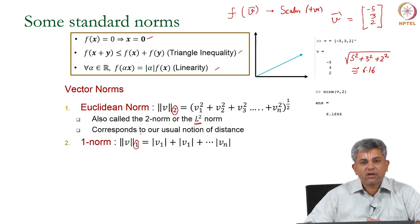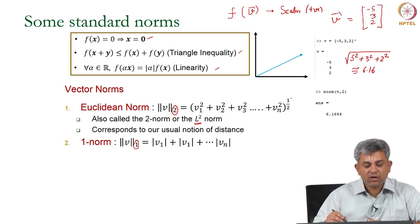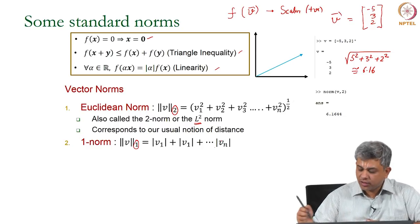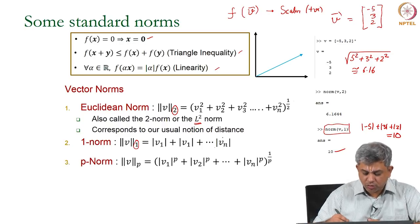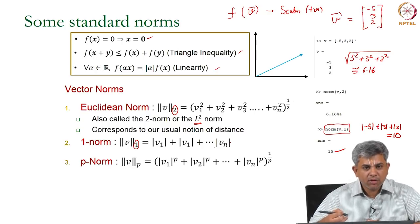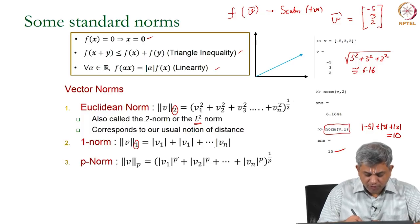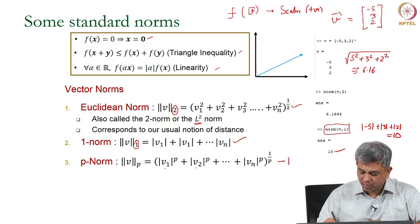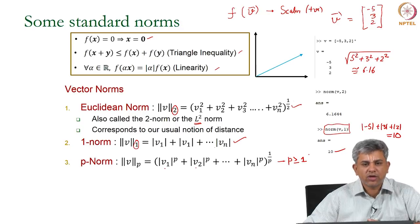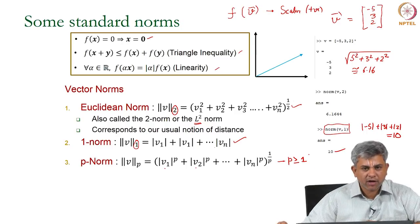A similar norm is called the 1-norm. Instead of squaring and taking the square root, you simply add the absolute values. So the 1-norm here is the absolute value of minus 5 plus absolute of 3 plus absolute of 2, which equals 10. Using these two you can generalize to the P-norm: it is the sum of absolute values of each component raised to the power P, all raised to the power 1 over P. This definition is valid for P greater than or equal to 1, covering both the 1-norm and 2-norm.